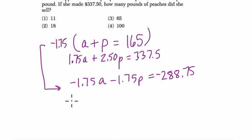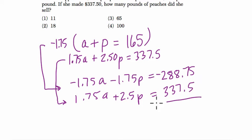And now we've got to add that to this equation here. We're going to add these two. So 1.75A plus 2.5P equals 337.5. Now when we add these two equations, we can add equations just like we add numbers. If we add these two equations here, these terms are opposites that cancel out.